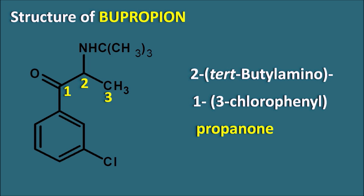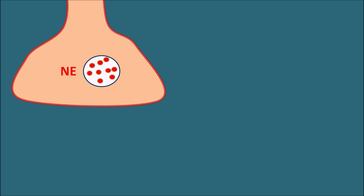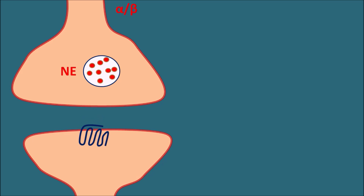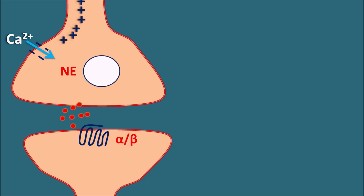Although the exact mechanism is unknown, bupropion is thought to inhibit the reuptake of two important mediators within the CNS: norepinephrine and dopamine. The presynaptic nerve terminal stores norepinephrine, which is released by exocytosis when calcium enters due to an action potential. This norepinephrine then acts on postsynaptic neurons equipped with alpha or beta receptors, transmitting the signal from presynaptic to postsynaptic neurons.